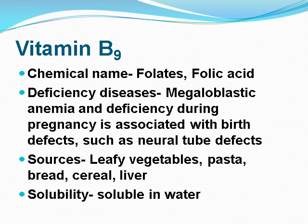Vitamin B9: its chemical name is folate or folic acid. Vitamin B12: its chemical name is cyanocobalamin or hydroxocobalamin. Deficiency diseases include megaloblastic anemia; deficiency during pregnancy is associated with birth defects such as neural tube defects. Sources include leafy vegetables, pasta, bread, cereal, and liver. Solubility: it is soluble in water.